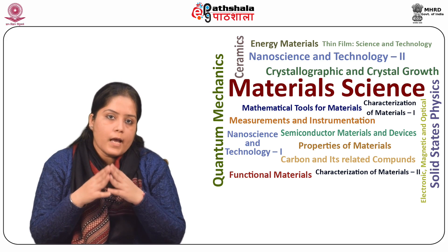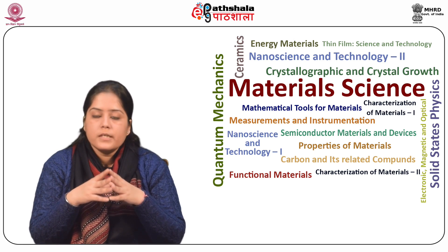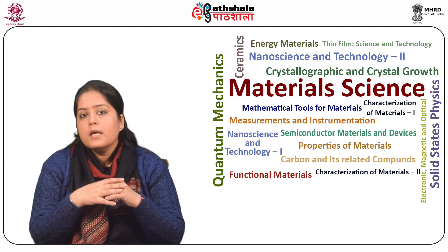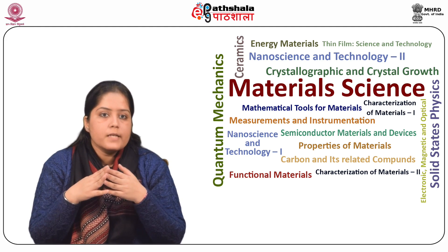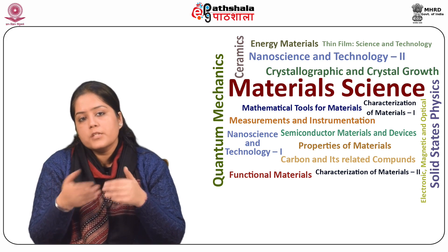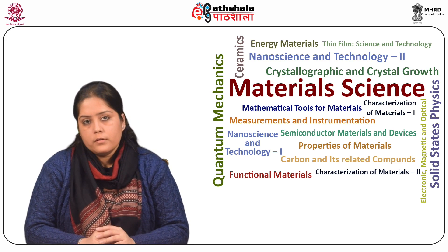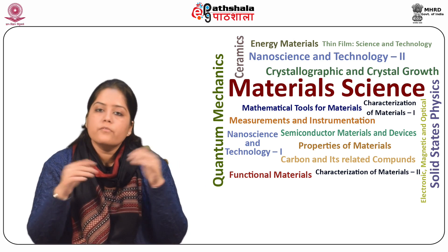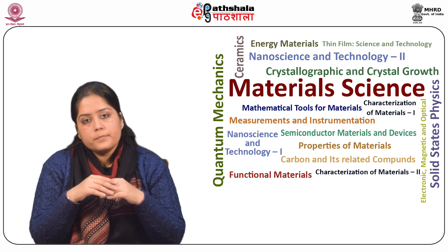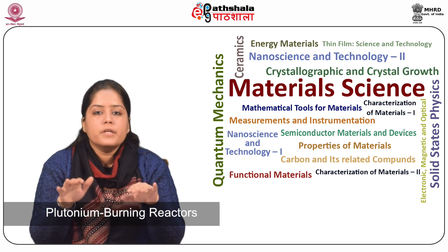Plutonium looks originally as a bright silvery white metal which changes to a different colour after its oxidation in air. Its smaller mass, high toxicity and pyrophoricity requires safe handling. It can be recovered from the spent fuel of a thermal reactor via chemical treatment. Useless uranium can be used along with plutonium for fuels utilized in LMFBRs, while separated plutonium can be used in plutonium-burning reactors.